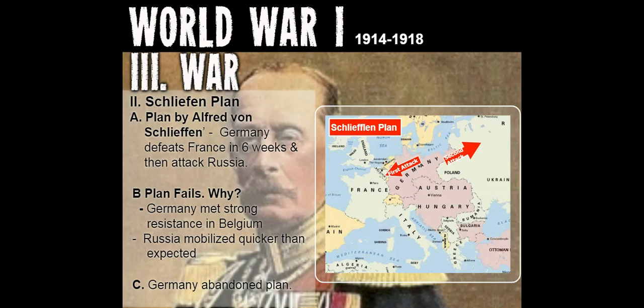Speed was very important to the Schlieffen Plan — it had to be done quickly. German leaders knew they needed a quick victory over France to be successful. Early on it seemed like Germany would accomplish it — by early September, German forces had swept into France and reached the outskirts of Paris. A major German victory appeared just days away. But on September 5th, the Allies managed to regroup and attacked the Germans northeast of Paris in the valley of the Marne River.